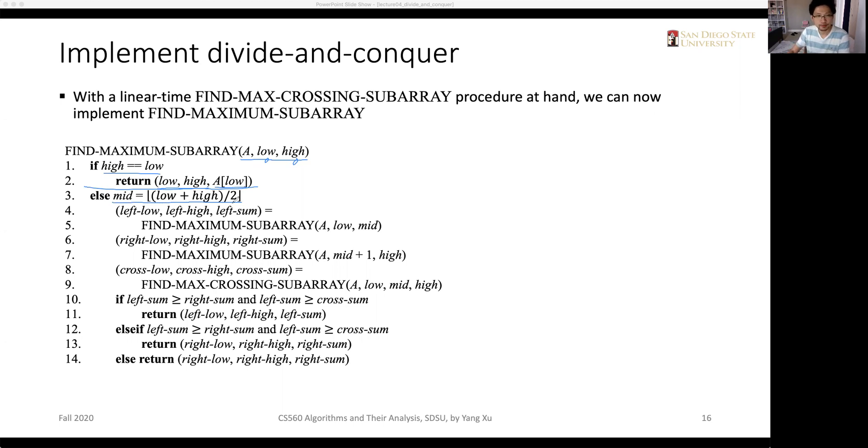And first, from line four to five, we will conquer the left half by calling the find maximum sub-array recursively on the left half. Notice that the input sequence doesn't change. It's A. And the lower index is low, but the higher index becomes mid because we call the function itself, we call the procedure itself on the left half.